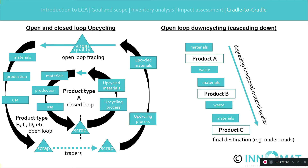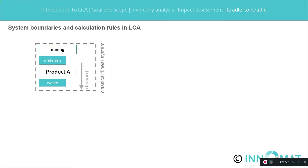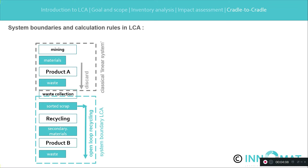In contrast to upcycling in open-loop, there is a form of recycling called downcycling. At each recycling loop, the functional material quality is degrading, so the value of the material cascades down. An example is concrete: Product A is concrete with natural gravel, Product B is concrete with an aggregate of crushed concrete, and Product C is crushed concrete under a road. The simple classical LCA calculations seem to be linear, but that is misleading. However, when you start with waste, sort it, and recycle it instead of starting with mining, you are basically working in a circular economy.